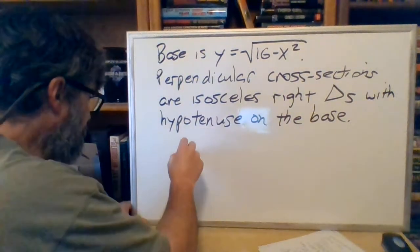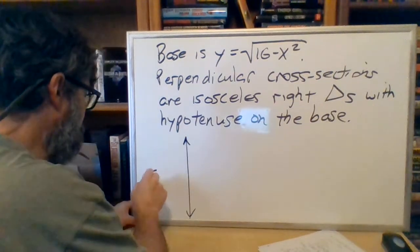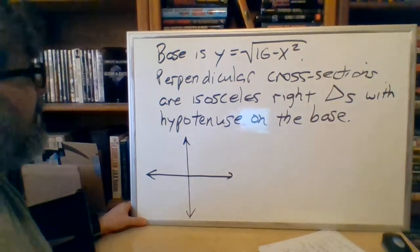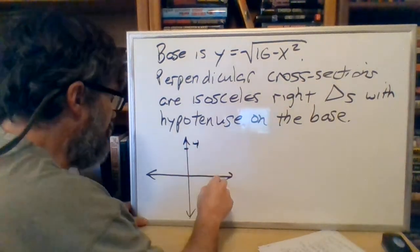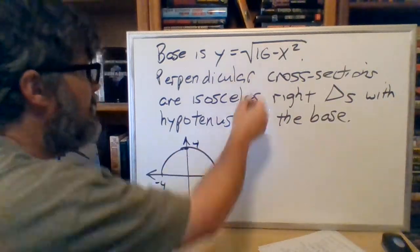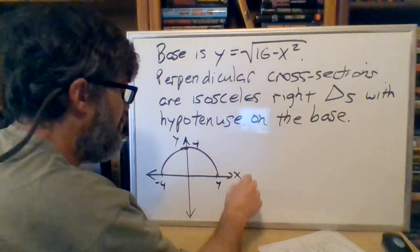Okay, so let me look at that base. I always want a nice picture of the base so I can get that equation. This is going to go up to 4 and over to 4 and back to negative 4. That's going to be the base. There's my equation of the base. Y, x.